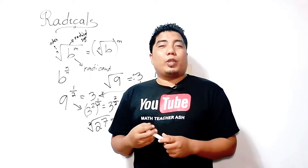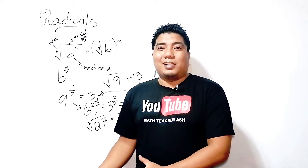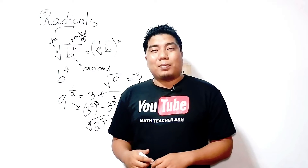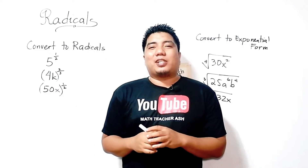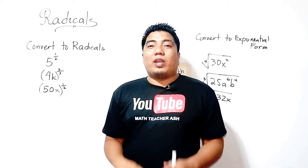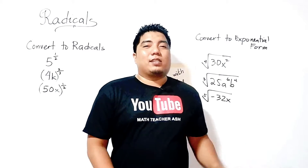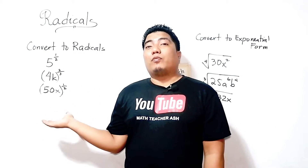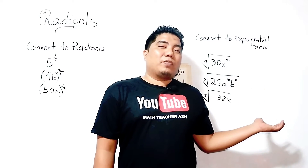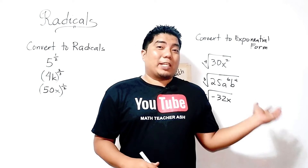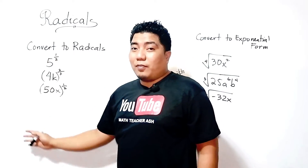So, the question is: how do we convert radical to exponential form, or exponential form to radicals? We will consider these examples. We have two different exercises. The first set contains expressions with rational exponents that we will convert to radicals, and the second set contains radicals that we will convert into exponential form.